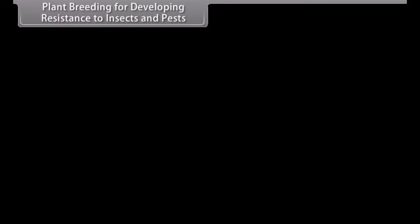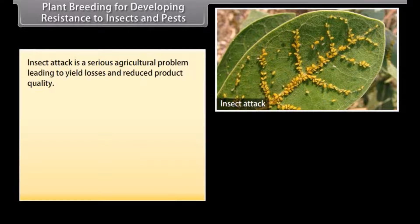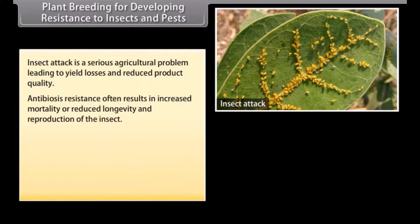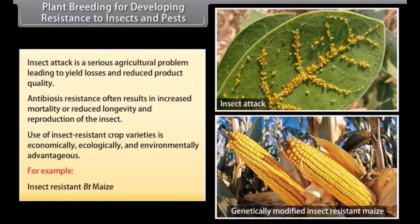Plant breeding for developing resistance to insects and pests: insect attack is a serious agricultural problem leading to yield losses and reduced product quality. Antibiosis resistance often results in increased mortality or reduced longevity and reproduction of the insect. Use of insect-resistant crop varieties is economically, ecologically and environmentally advantageous. For example, insect-resistant Bt maize.